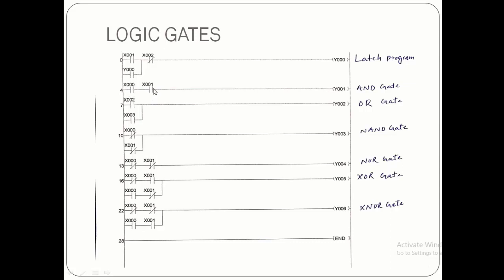If either input X0 or X1 is turned off, the AND gate output will be off; when both inputs are on, the output will be on. For the OR gate, both inputs X2 and X3 are connected in parallel — when either one is on the output will be on, and when both inputs are off the output will be off.